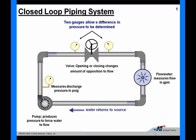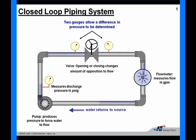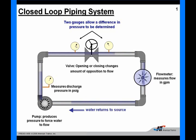Electricity works just like water flowing through a piping system. Here we have a pump in the bottom left-hand corner of the screen. As the pump turns, it builds up a pressure. That water pressure then forces water to flow through the valve, through a flow meter that measures the volume of water flowing in gallons per minute, and then the water returns back to the source — back to the pump where it came from. We could install some pressure gauges: one on the discharge of the pump, another on the inlet side of the valve, and another on the outlet side of the valve. We could subtract one pressure gauge from the other and find the difference in pressure across the valve.